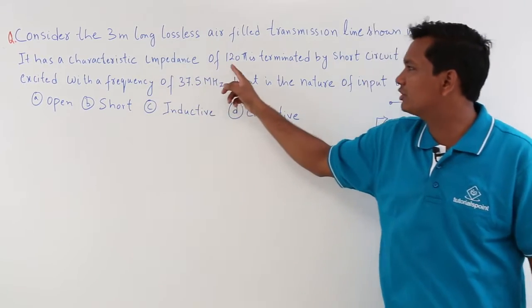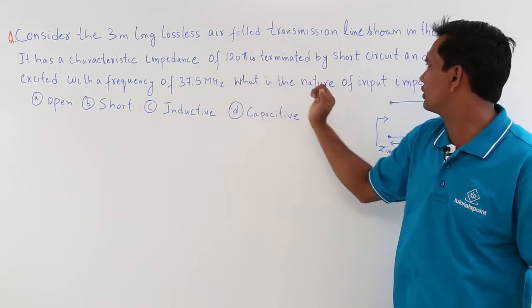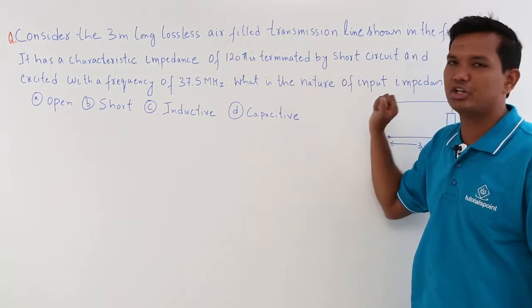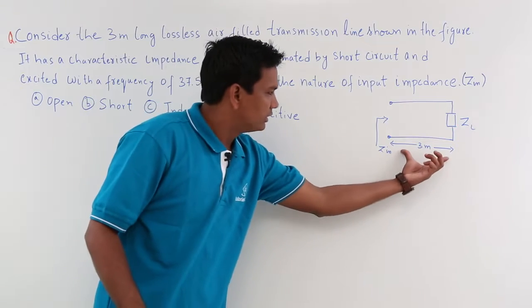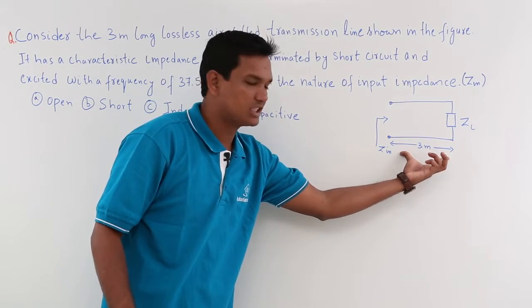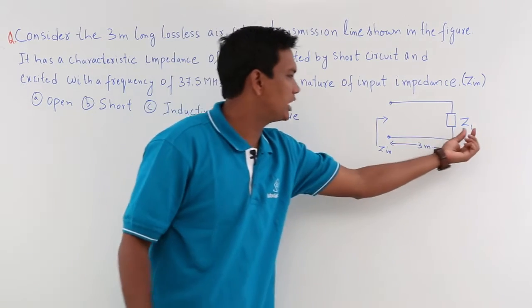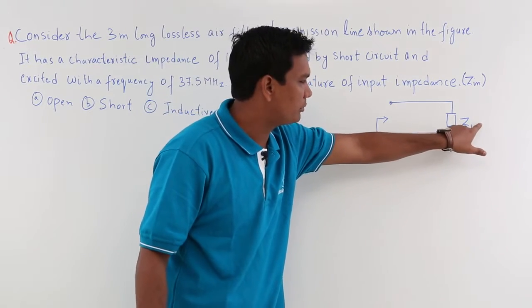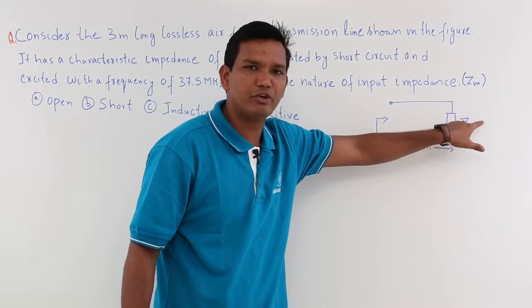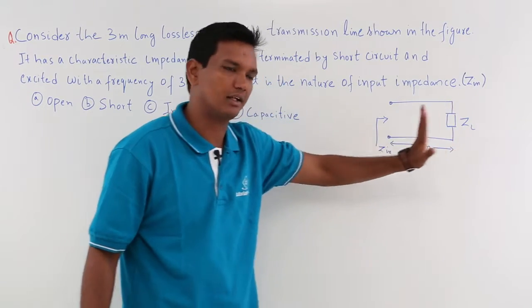The characteristic impedance of that is 120π and it is terminated by a short circuit. What you can see is there is a 3 meter long lossless transmission line and it is being terminated to a short circuit. Though in the question they have not mentioned the value of ZL, we know that for a short circuit what will be the value of ZL.